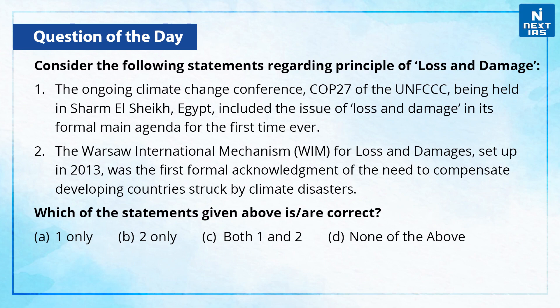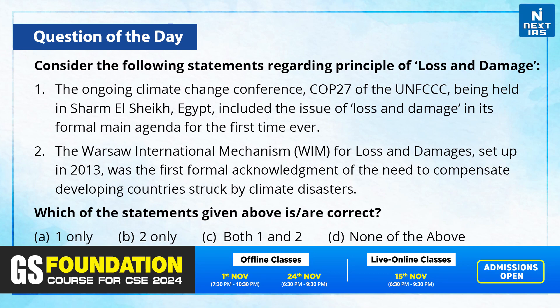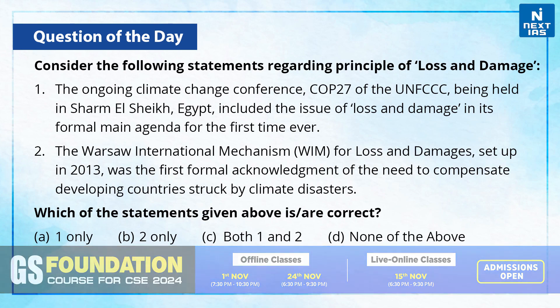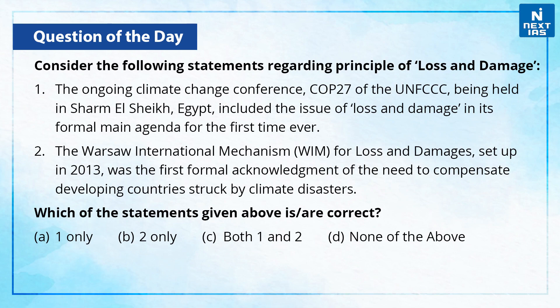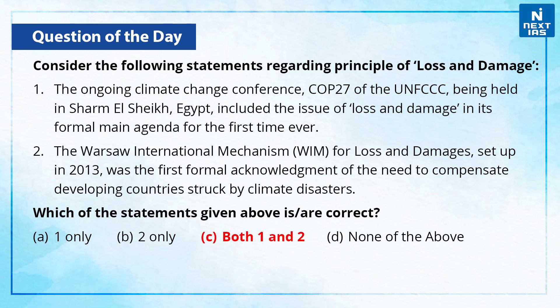Now let us take up one practice question. Consider the following statements regarding the principle of loss and damage. First, the ongoing climate change conference COP27 of the UNFCCC being held in Sharm al-Sheikh, Egypt included the issue of loss and damage in its formal main agenda for the first time ever. Second, the Warsaw International Mechanism for Loss and Damages set up in 2013 was the first formal acknowledgement of the need to compensate developing countries struck by climate disasters. Both of the statements are correct, therefore the correct answer is option C, that is both 1 and 2.